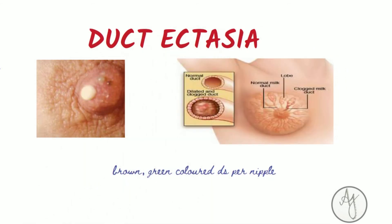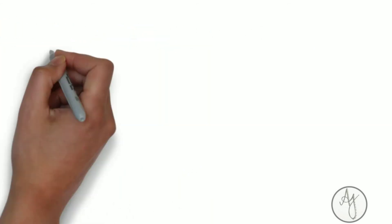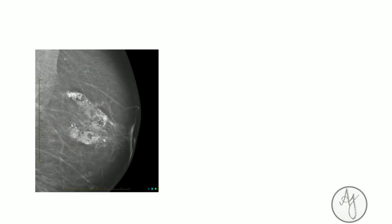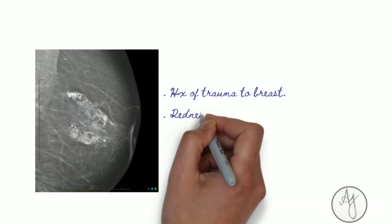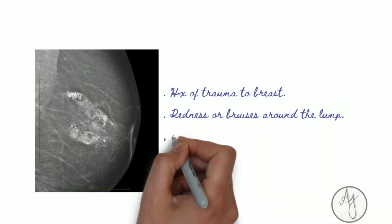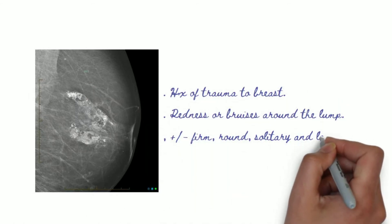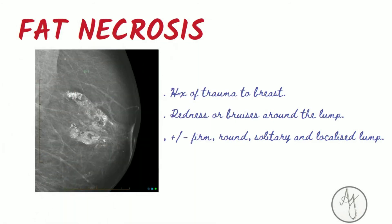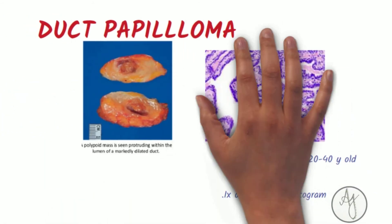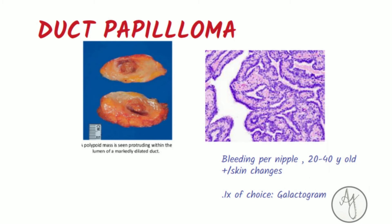If there is a history of trauma to the breast, redness or bruises around the lump, and a firm, solitary, and localized lump, it is most likely fat necrosis.